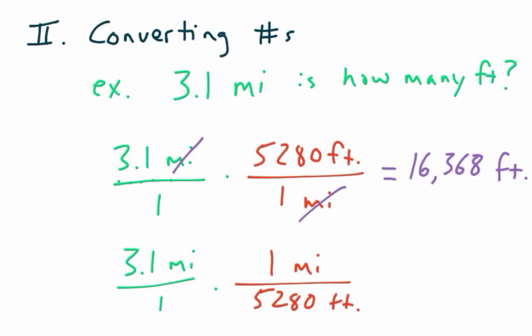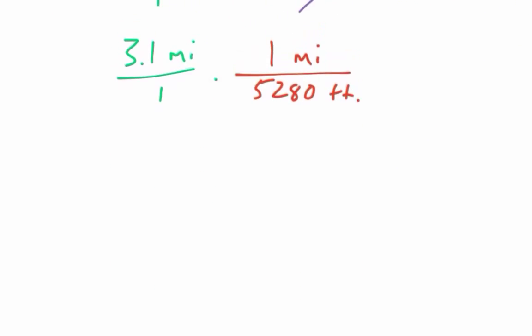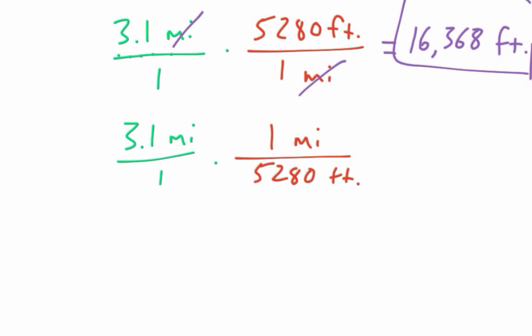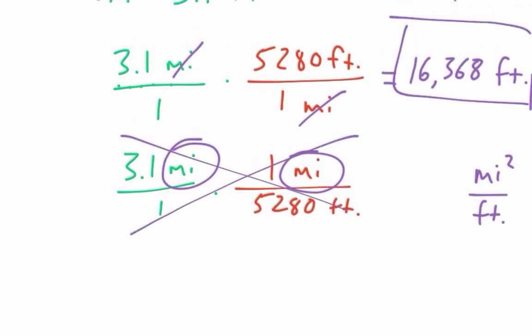We know we did it right. If instead we tried writing our conversion ratio the second way here on the bottom, then it won't cancel. We have miles in the numerator, miles in the numerator. We can't cancel out miles. So now if we combine those fractions, we end up with like a miles squared, a miles times miles in the numerator, a feet in the denominator. That's just messed up. So then you know this isn't the way to combine the things. You want to always combine the things in a way that make the units cancel out.